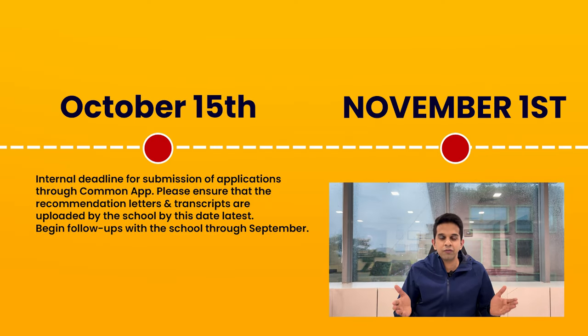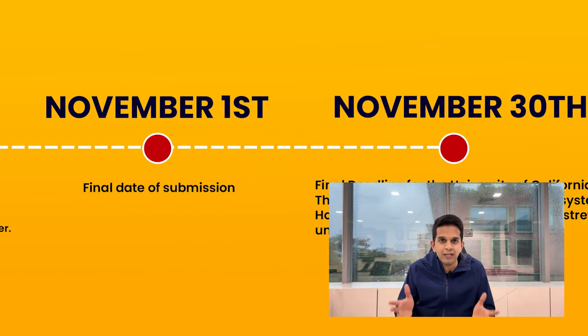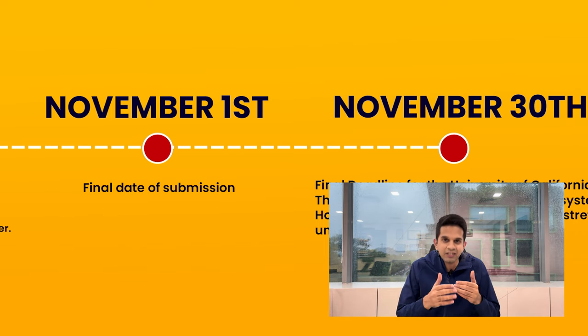This buffer period can also be used to work on Apply Texas essays if you're applying to Texas universities. Keep in mind that this year, popular Texas schools like UT Austin, UT Dallas, and Texas A&M are on the Common App itself, so you don't have to do the Apply Texas application. We recommend keeping October 15th as your internal deadline to submit all your applications. November 1st is typically the early action deadline, but don't stretch it till deadline day — apply early because the likelihood of getting in when you apply by the EA deadline is far, far higher.